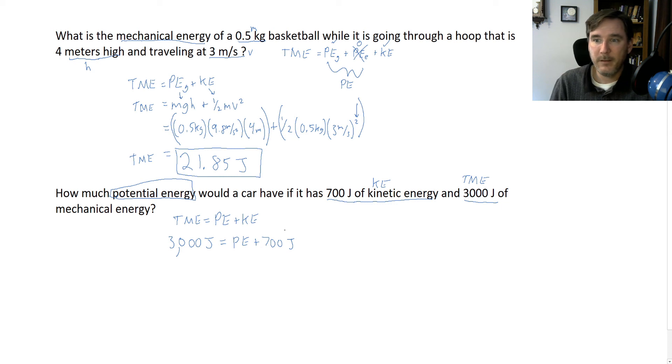Now this is being added, and so in order to get PE by itself we just have to do the opposite or the inverse of addition, which is going to be subtraction. So I'm going to subtract 700 joules from this side and it's going to leave PE by itself. But whatever I do to one side I got to do to the other side, so I'm going to subtract 700 joules.